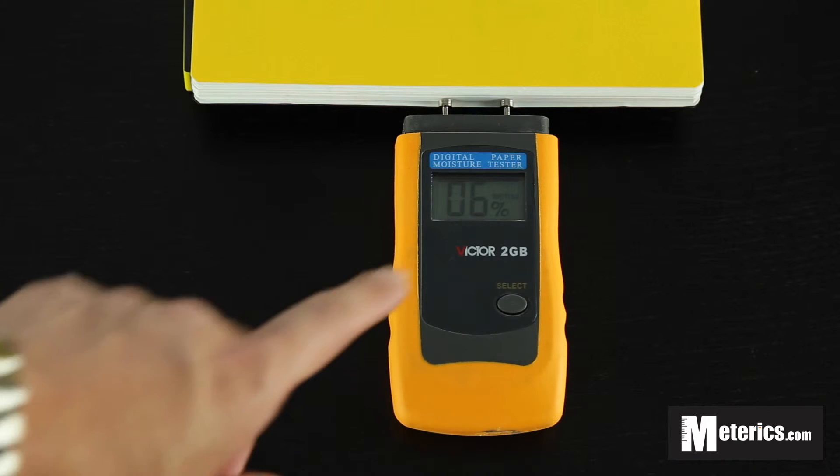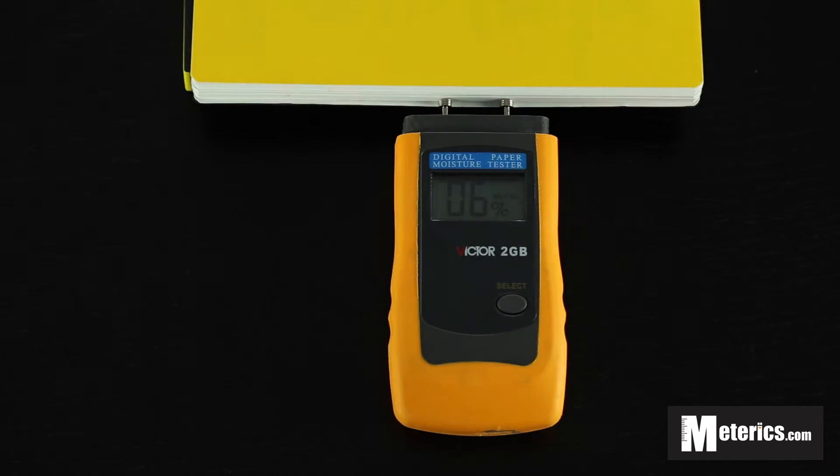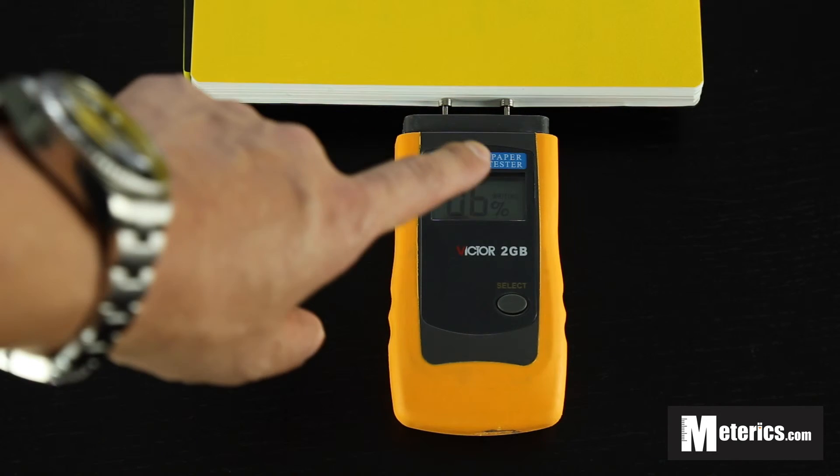The select button here is basically for you to select between the different types of paper you want to measure. As of now it's on writing paper as you can see.